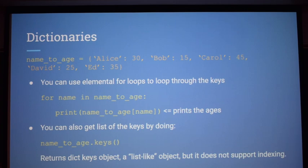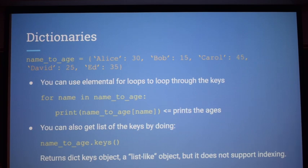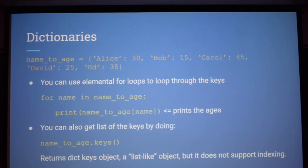For traversing through a dictionary, one way is using a for-each loop — this will go through all the keys in the dictionary. For example, for name in names_to_ages, you're going through the names, which are the keys, and you can print individual ages by indexing the dictionary with the name. That would print ages like 30, 15, 45, 25, 35. You can also get a list-like object of all the keys using names_to_ages.keys().